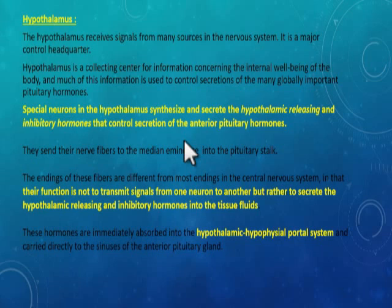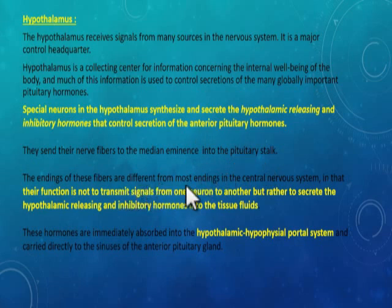Special neurons in the hypothalamus synthesize and secrete the hypothalamic releasing and inhibitory hormones that control the secretion of the anterior pituitary. The hypothalamus secretes six hormones — four are releasing hormones and two are inhibitory hormones — which control the secretion of the anterior pituitary gland. They send nerve fibers to the median eminence into the pituitary stalk, and the endings of these fibers differ from endings in the rest of the central nervous system.